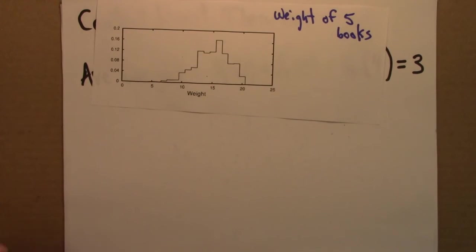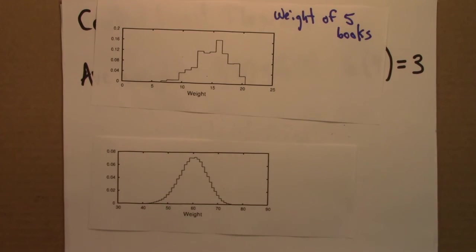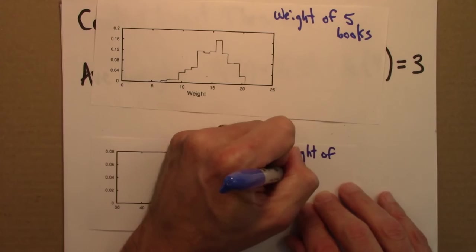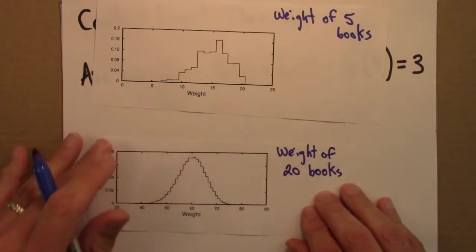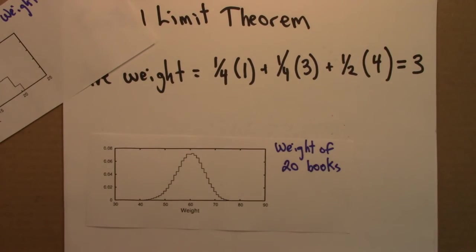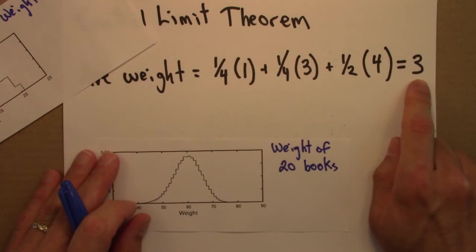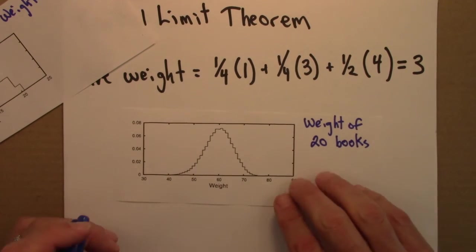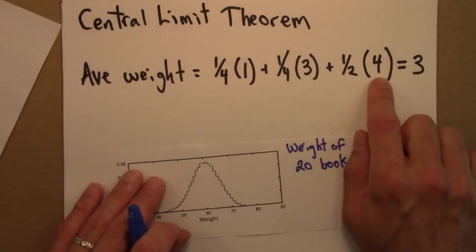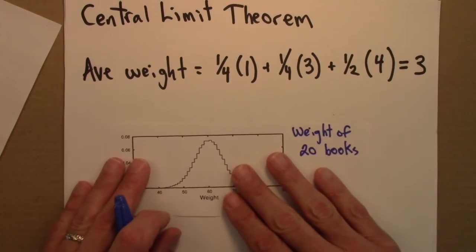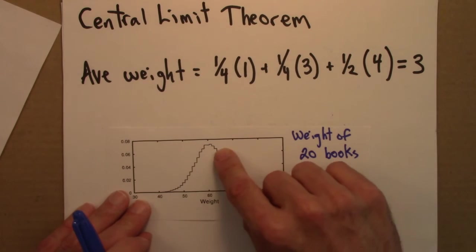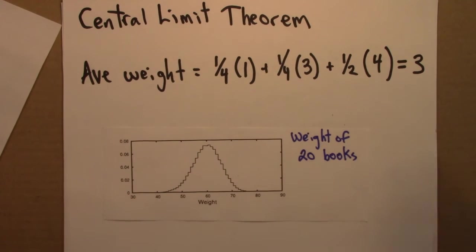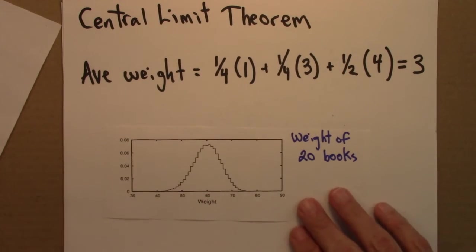Now imagine choosing 20 books instead. The expected average total is 60 — and we can see that here. Sometimes when you grab these 20 books you get a lot of the four-pound ones, sometimes not. But the distribution of 100,000 different samples of 20 books is starting to smooth out and, as you might expect, it's starting to look like a bell curve — a normal distribution.